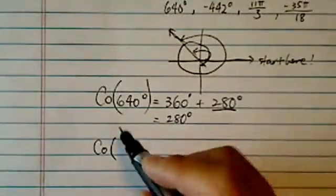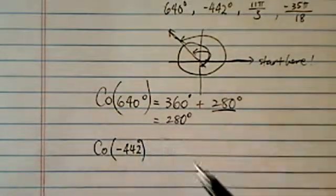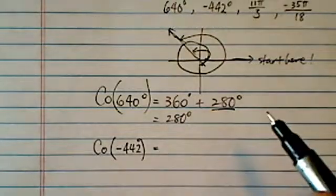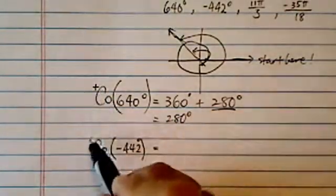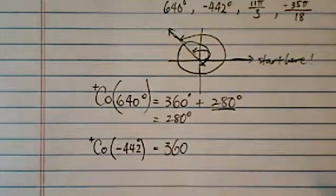Let's try another one. If you have coterminal angles, they're asking you to find this one. It's a negative angle. Now here, you're basically doing the same thing. If they're asking you to find a positive coterminal angle, add the 360 in front of it.